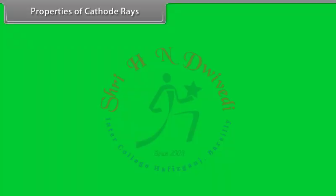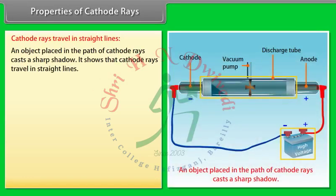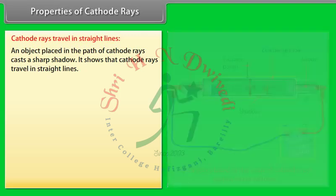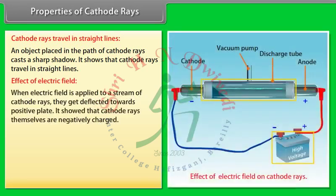Properties of cathode rays: Cathode rays travel in straight lines. An object placed in the path of cathode rays casts a sharp shadow, showing that cathode rays travel in a straight line. Effect of electric field: When an electric field is applied to a stream of cathode rays, they are deflected towards the positive plate, showing that cathode rays are negatively charged.